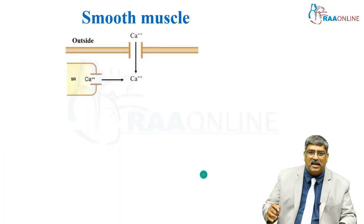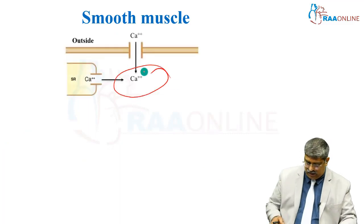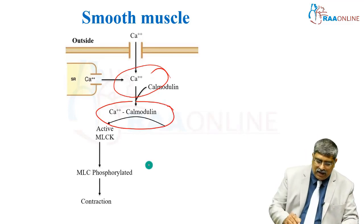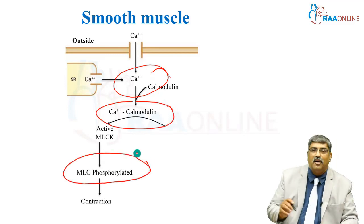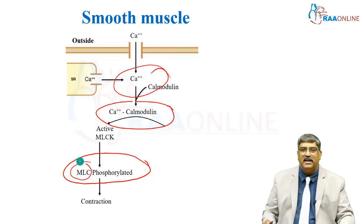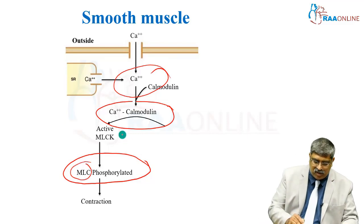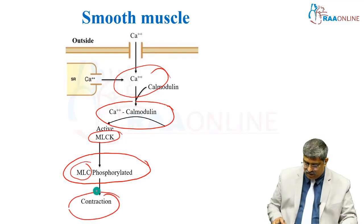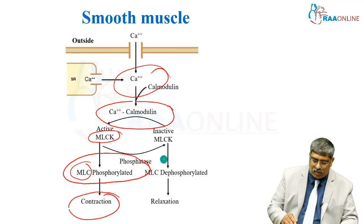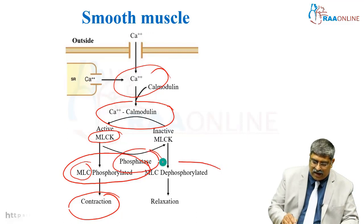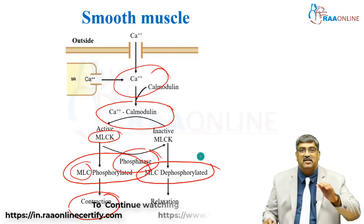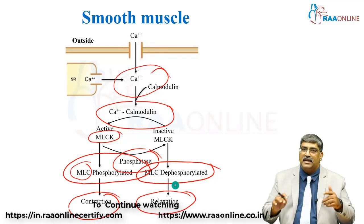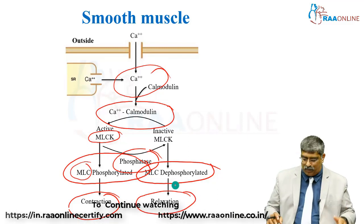You can see the calcium coming in, combining with calmodulin, and phosphorylating the myosin light chain. MLC is myosin light chain, and phosphorylation is carried out by myosin light chain kinase, causing contraction. Once contraction is over, phosphatase takes over and the myosin light chain is dephosphorylated, leading to relaxation. This is how contraction and relaxation occur in smooth muscle.